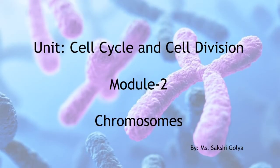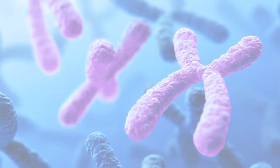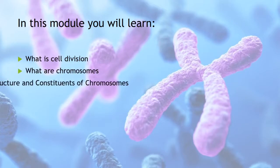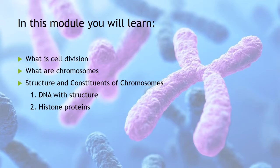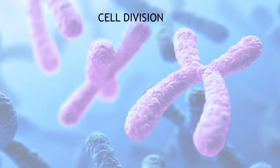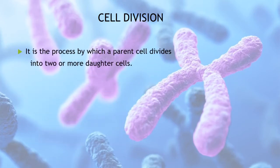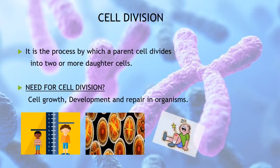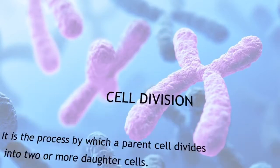In my last video I discussed cell division and its types. In this video we will learn about the basic component which facilitates cell division, that is chromosomes. In this module you will learn about cell division, chromosomes, structure and constituents of chromosomes. Cell division is the process by which a parent cell divides into two or more daughter cells. It is an important process for every organism as it supports cell growth, development, repair and replacement.